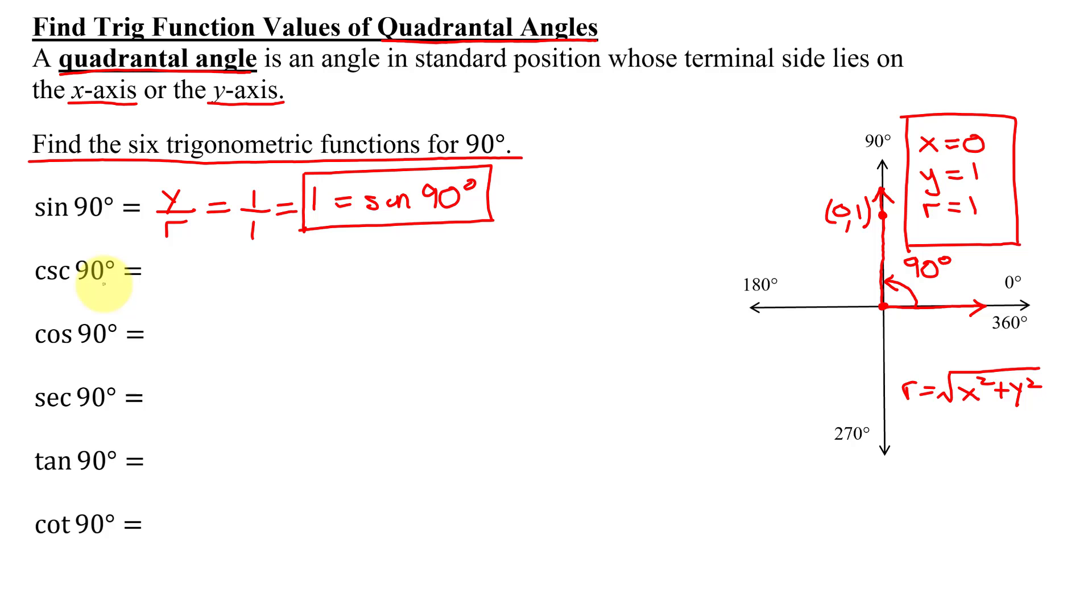The cosecant of 90 degrees is the reciprocal of the sine function. It's r over y. So that's going to equal 1 over 1, which is 1. So that is the cosecant of 90 degrees.